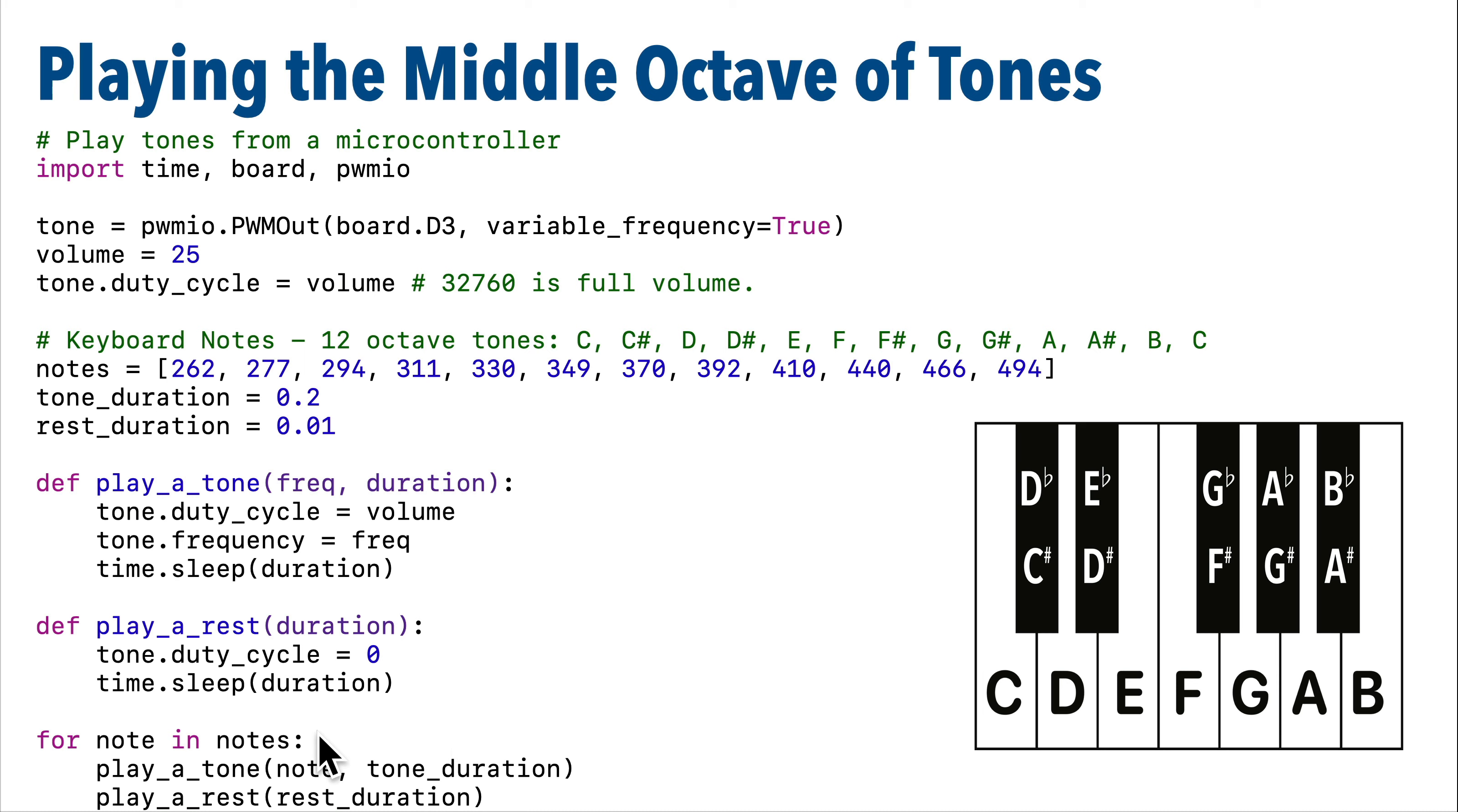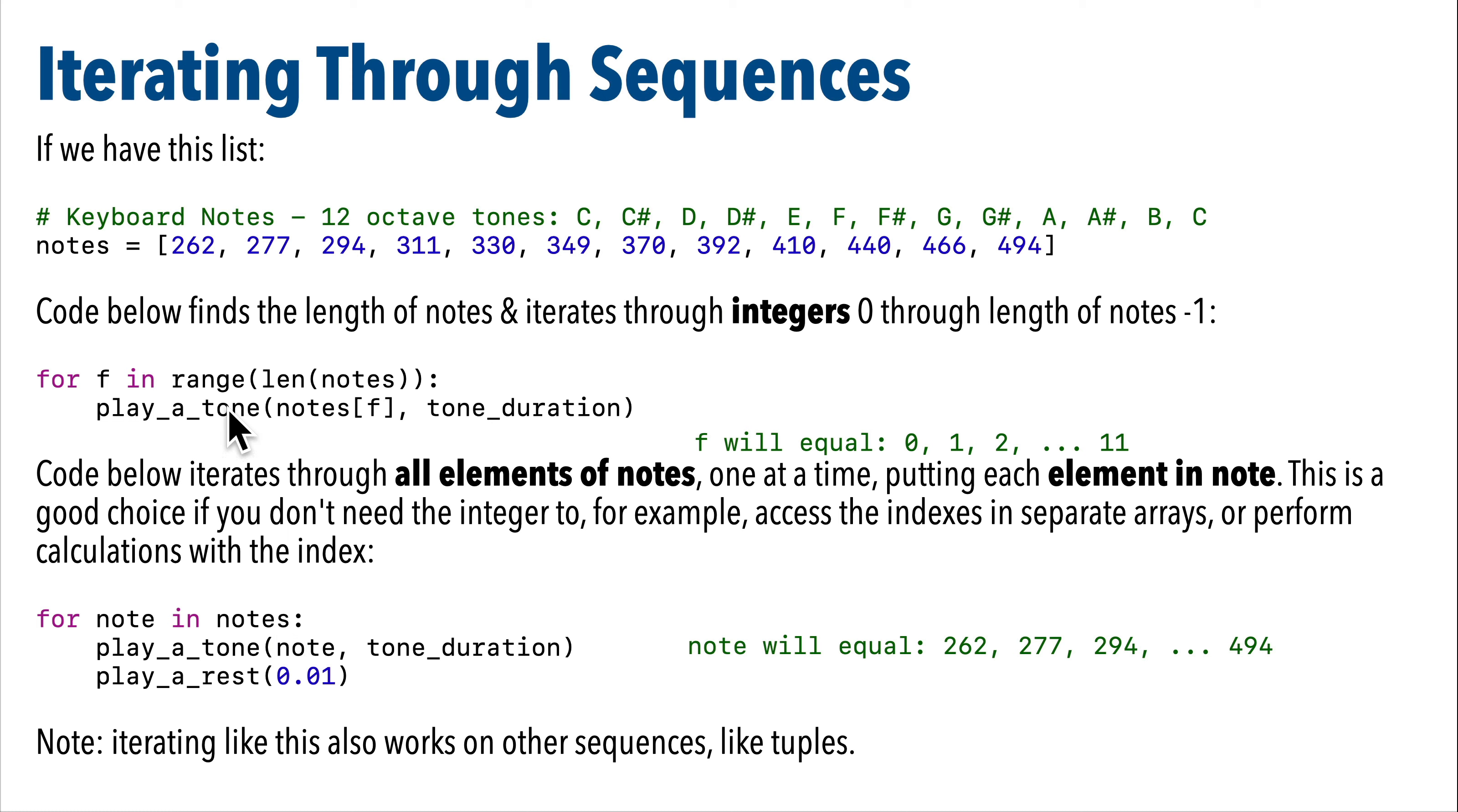But it will play all twelve notes, and I do that by going through all the frequencies in the notes list. You might notice that this for loop looks different from some of the other loops that we've written. Normally we go through a range of integers, but here we don't have a range - we're just referring to a list of notes. The code down here iterates through a sequence, which in our case is a list, and that list is called notes. So the value note is an element of the list notes. This statement says go through every element of notes, that sequence, and put each element into the value note one at a time as you go through the loop with each iteration. So in this case, instead of getting the index value, we actually get the value of the element itself: 262, 277, all the way up to 494.